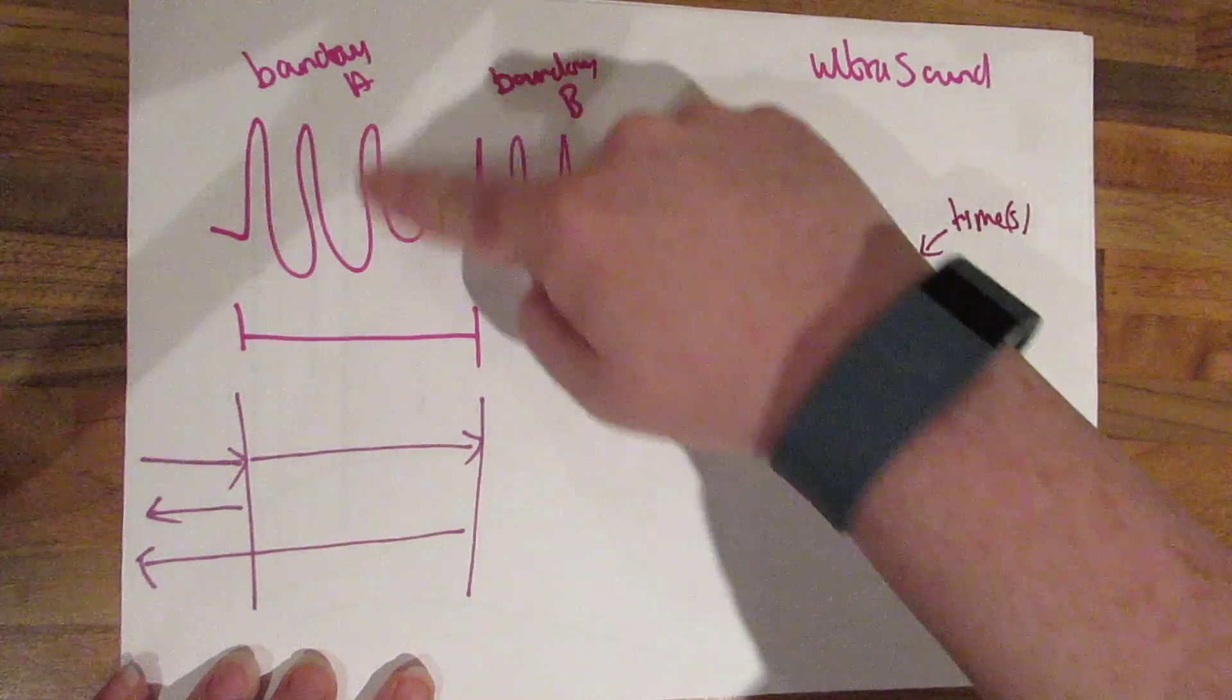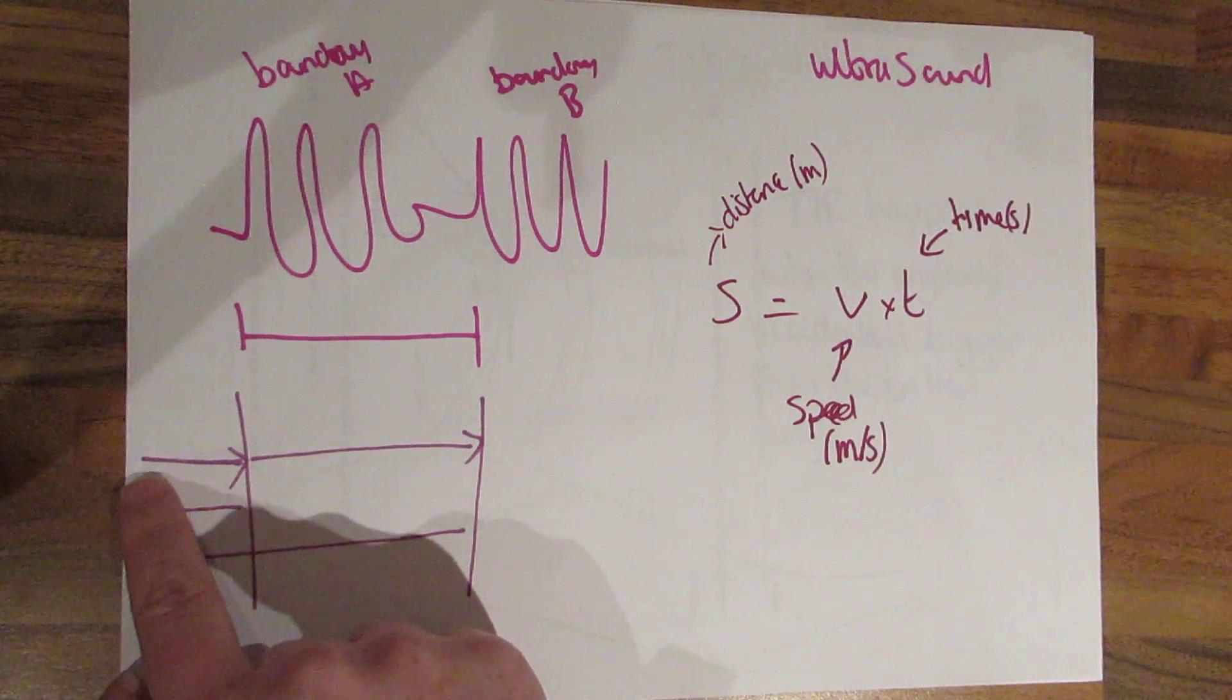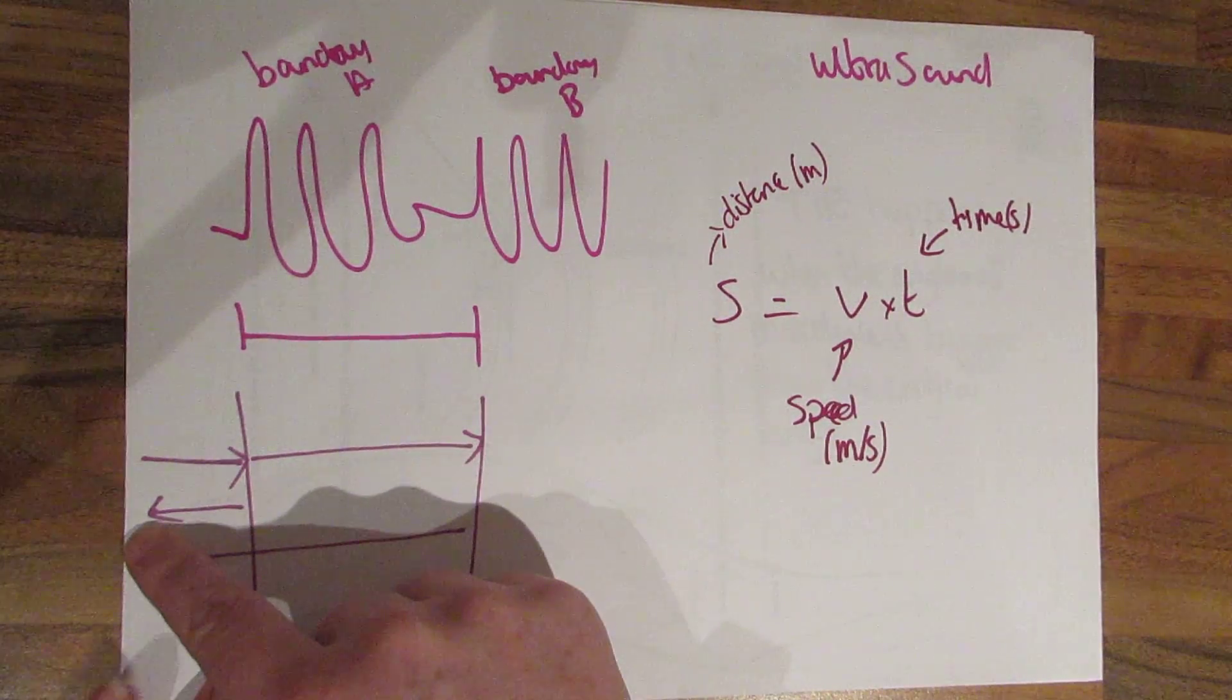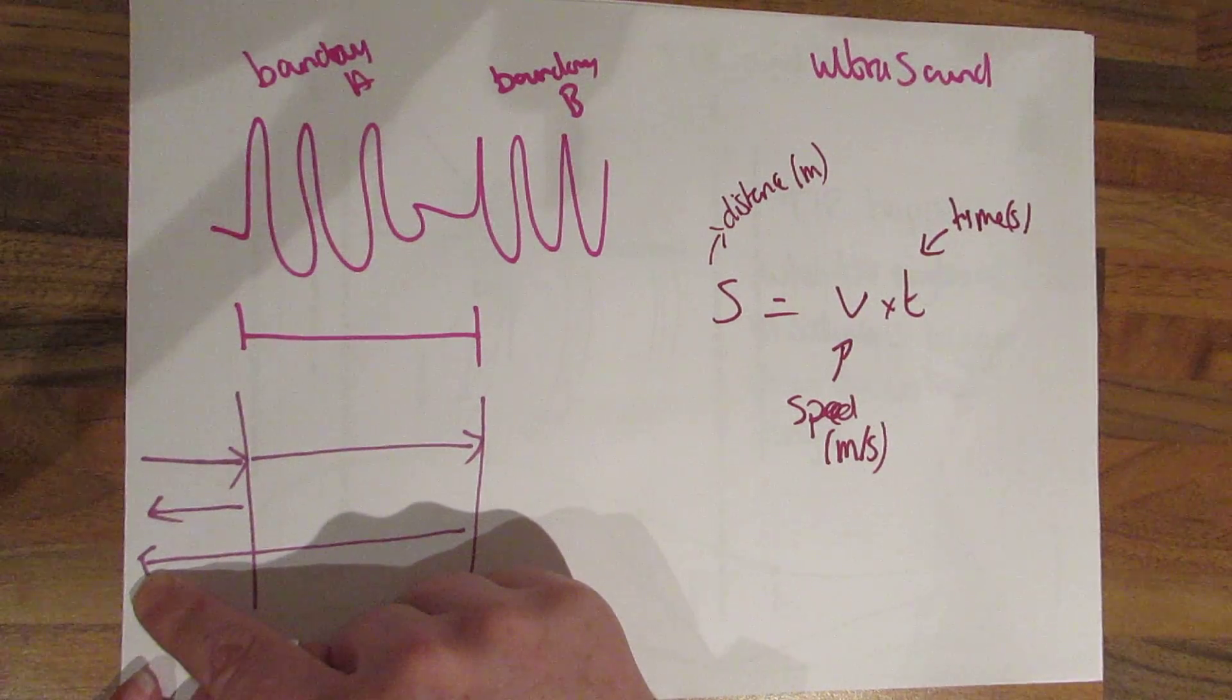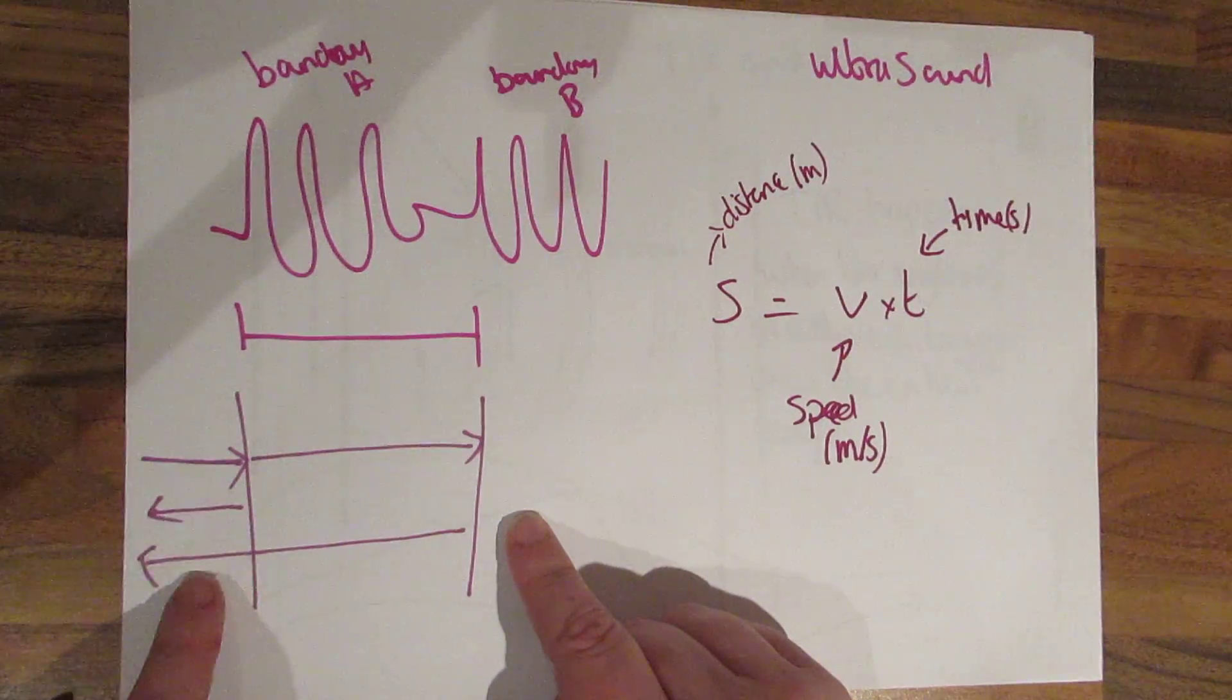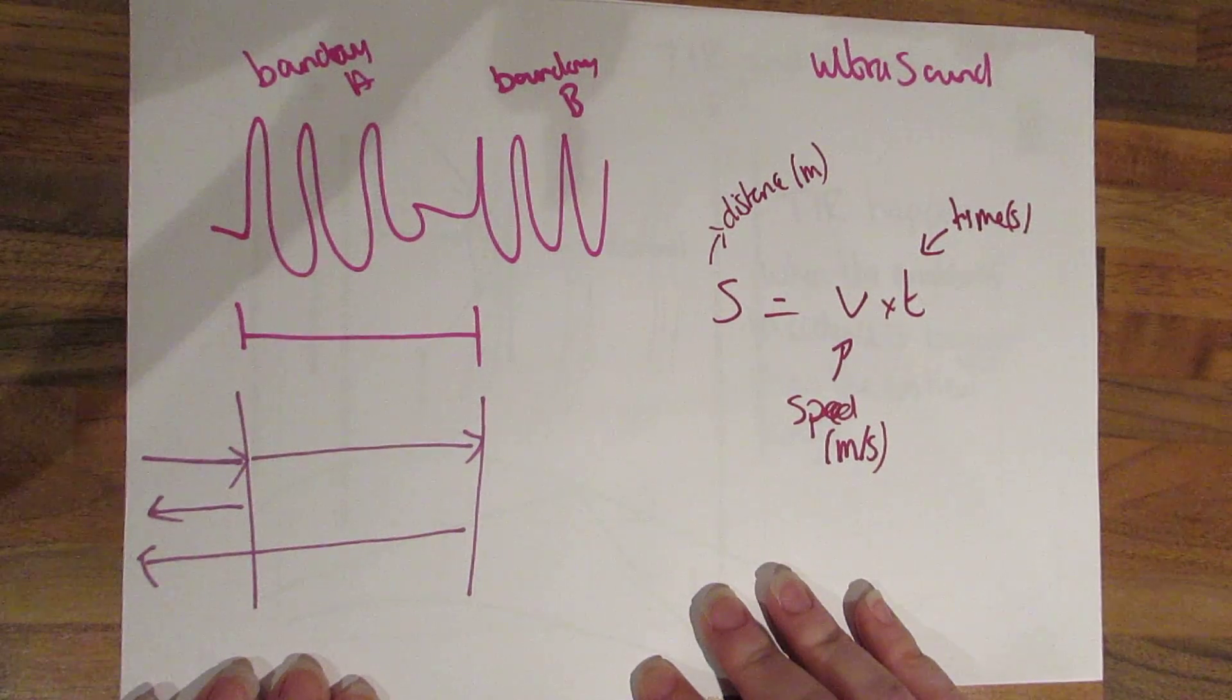The ultrasound is going to come up on an oscilloscope like this. You're going to have boundaries and if this is the ultrasound going in, some is going to reflect at this boundary, some is going to reflect at the second boundary and the distance, the difference in time between these two will allow you to work out the distance.